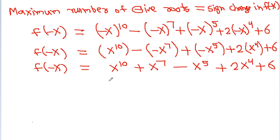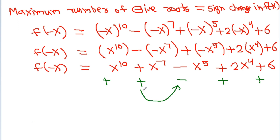The coefficient of x¹⁰ is positive, the coefficient of x⁷ is also positive, then negative, positive, positive. So the sign changes one time from positive to negative, and from negative to positive one time. Therefore, the sign change in f(-x) is also 2 times, giving a maximum of 2 negative roots.